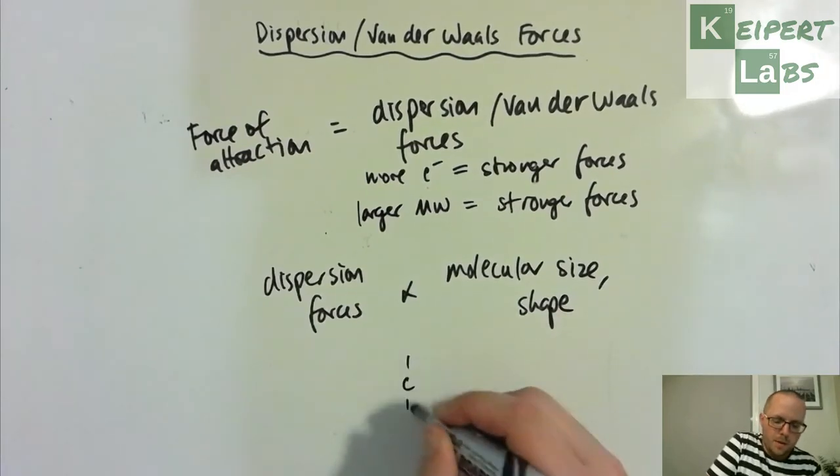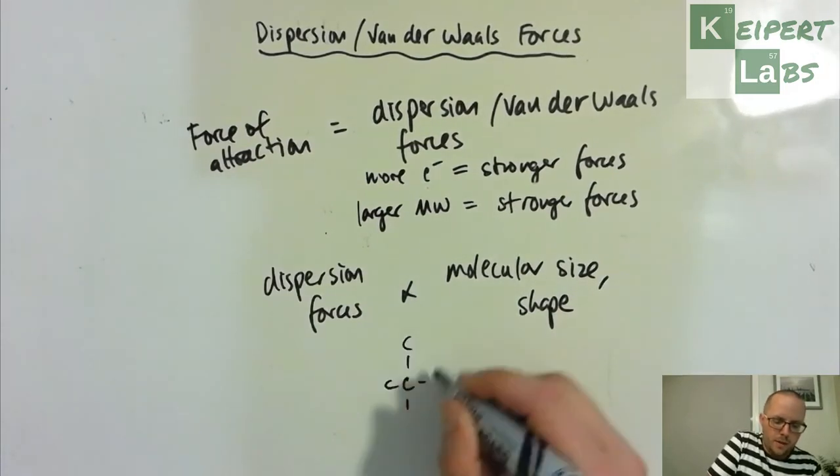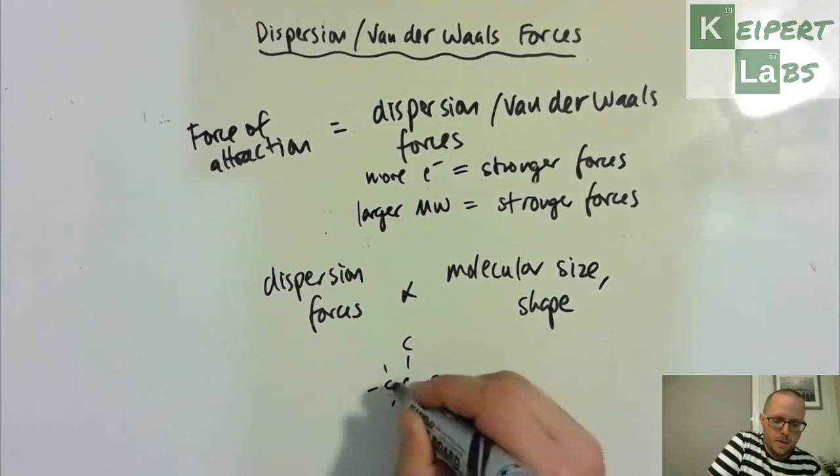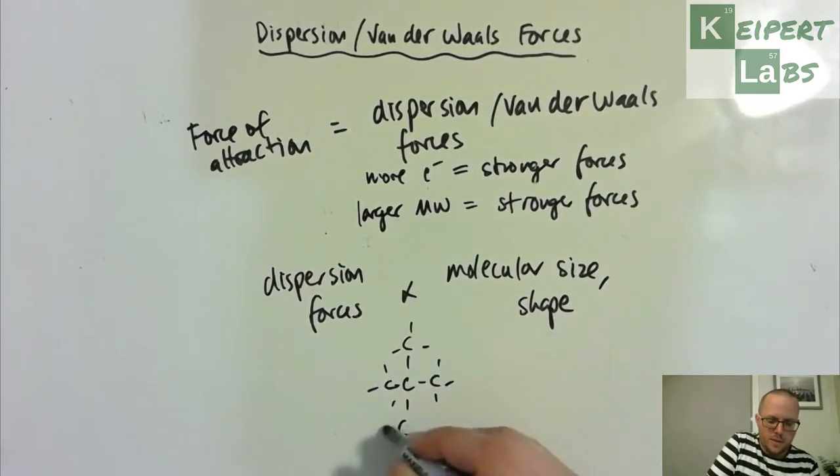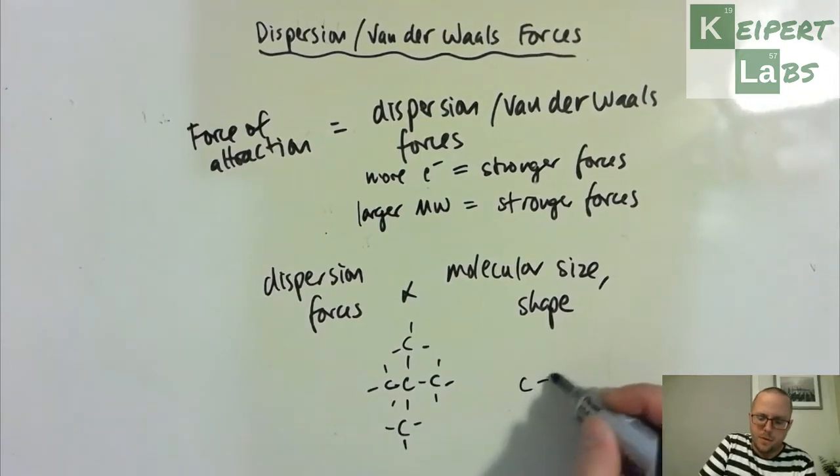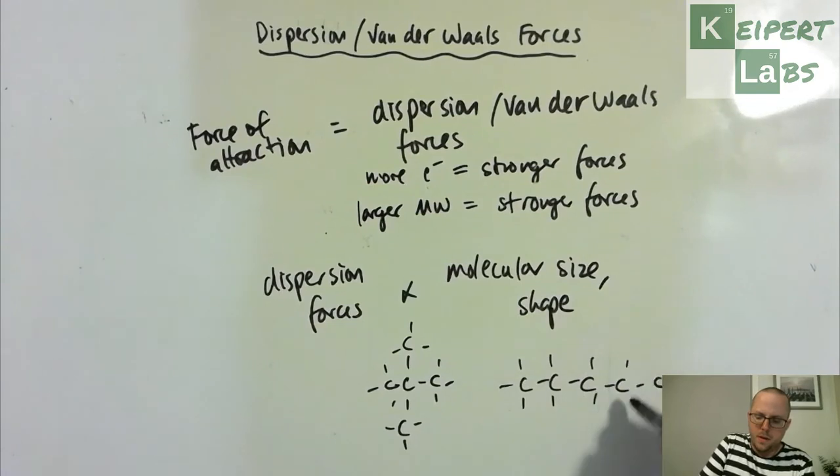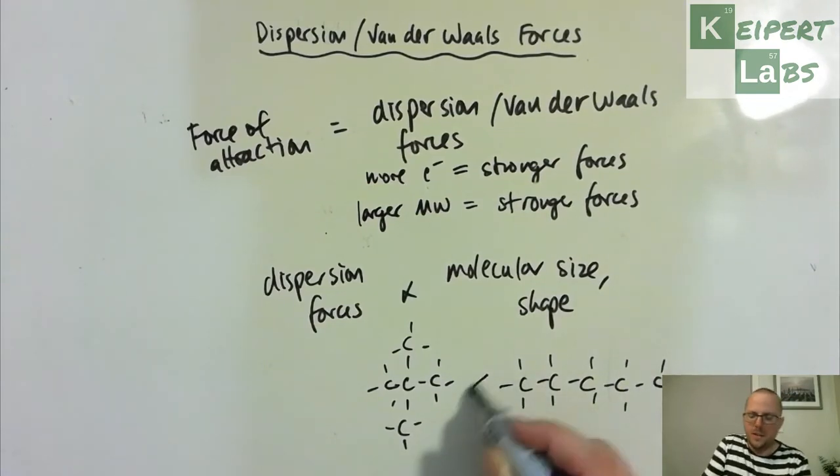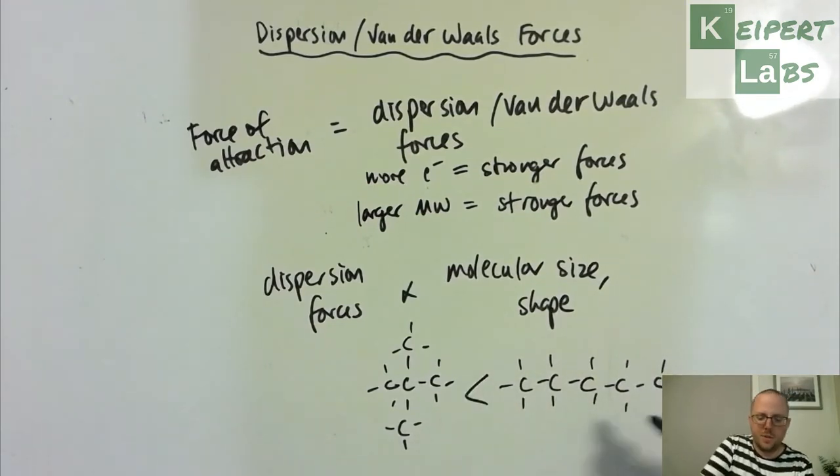For example, if you've got one that's five carbons like this versus one that's got five carbons like this - there's hydrogens here - this one is stronger, has the stronger dispersion forces than that one, because this one can interact with other molecules more closely.